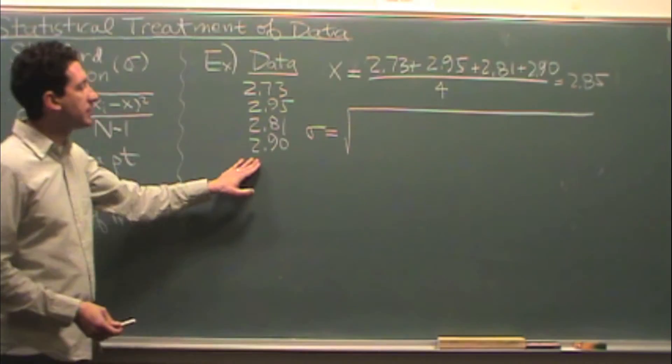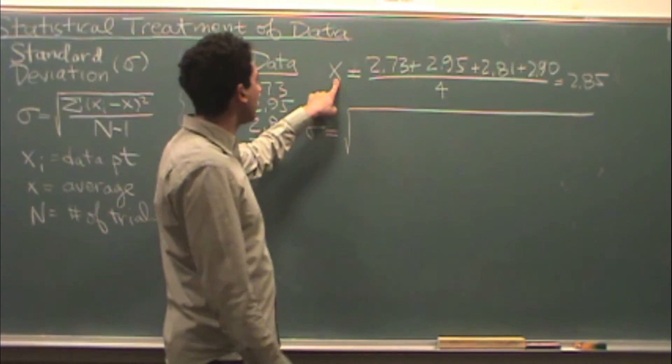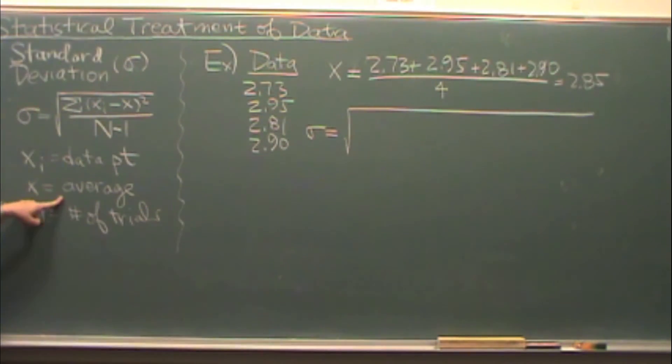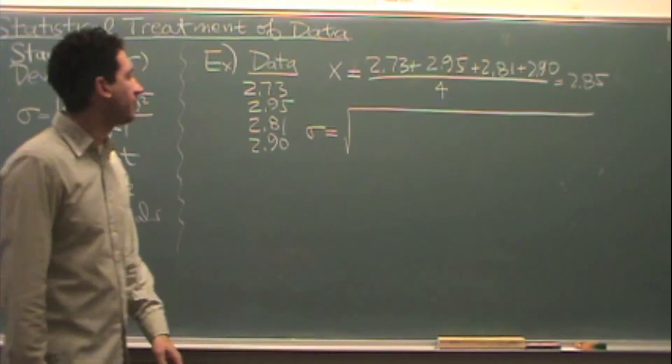So how would that work? Let's say you have these data points right here. You collect them in lab, and you're going to find x. Remember, x is the average. So you just sum it up, divided by the total number, which is 4. I got 2.85.